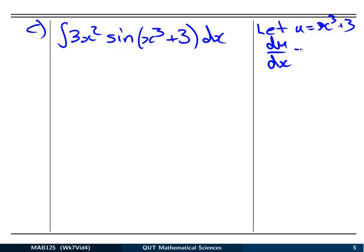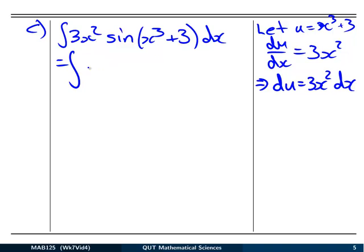Let u equal x cubed plus 3. So du dx is 3x squared, which is exactly what we've got there. In other words, we can make a direct replacement. du is going to be 3x squared dx. So our integral becomes the integral of sine of u, and 3x squared dx we replace with du.